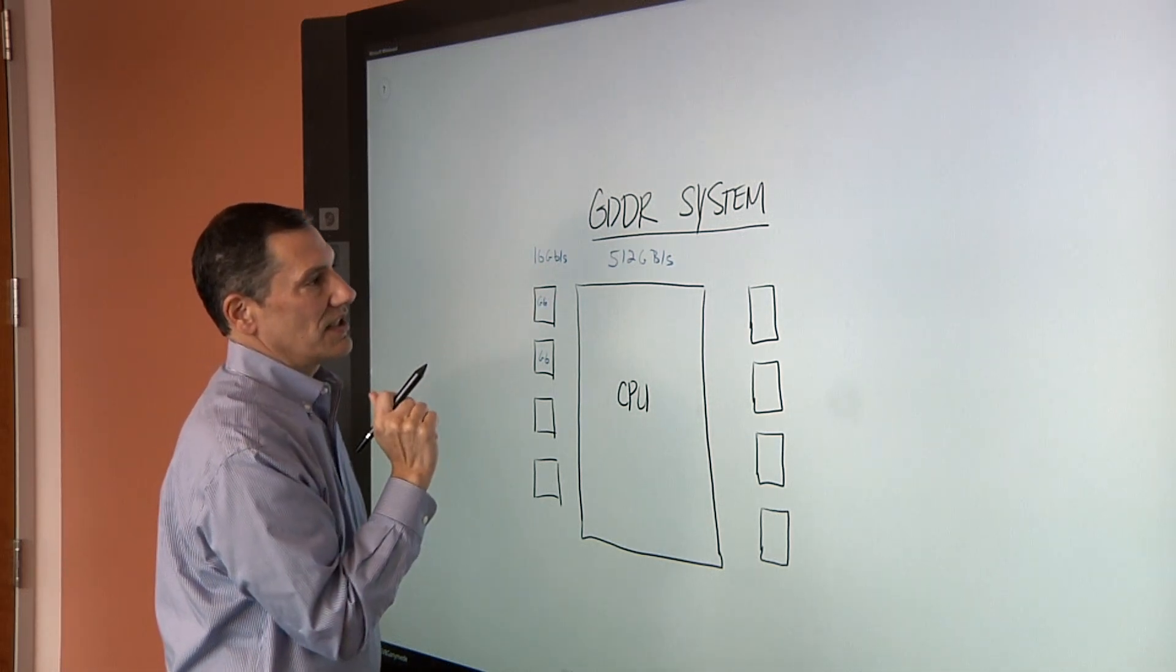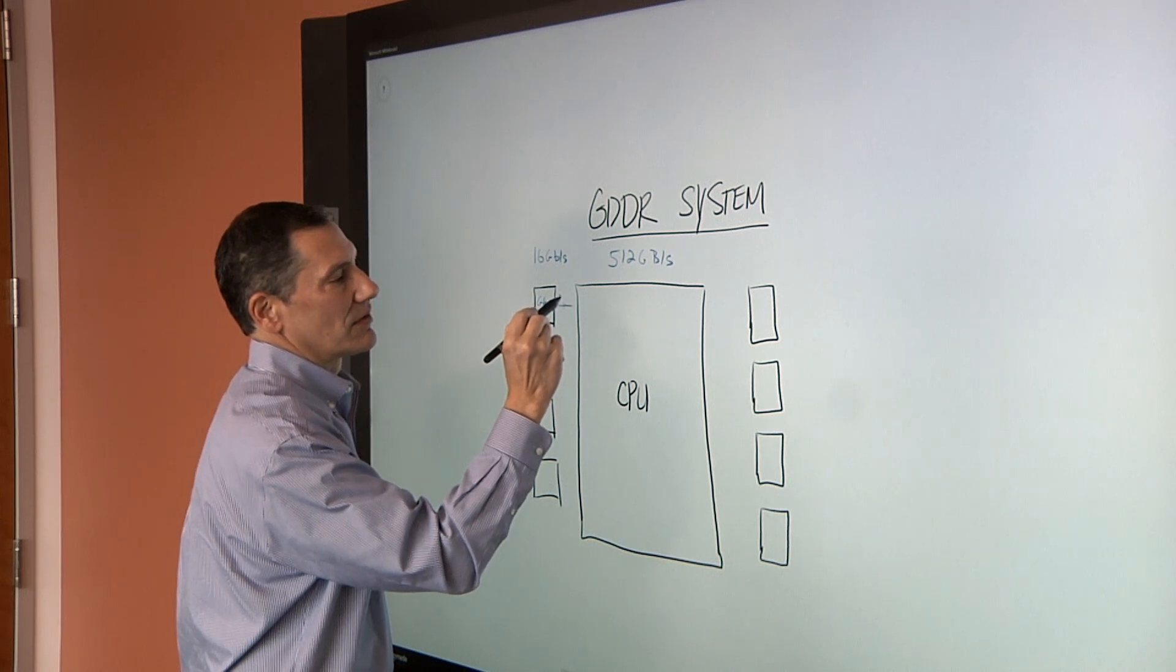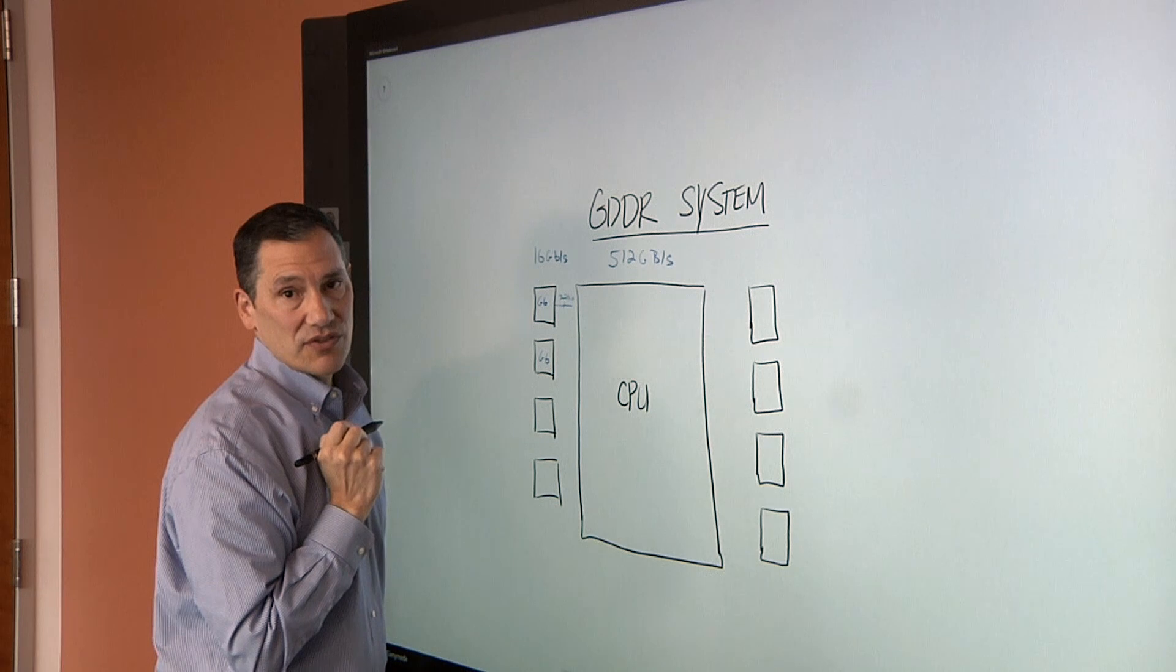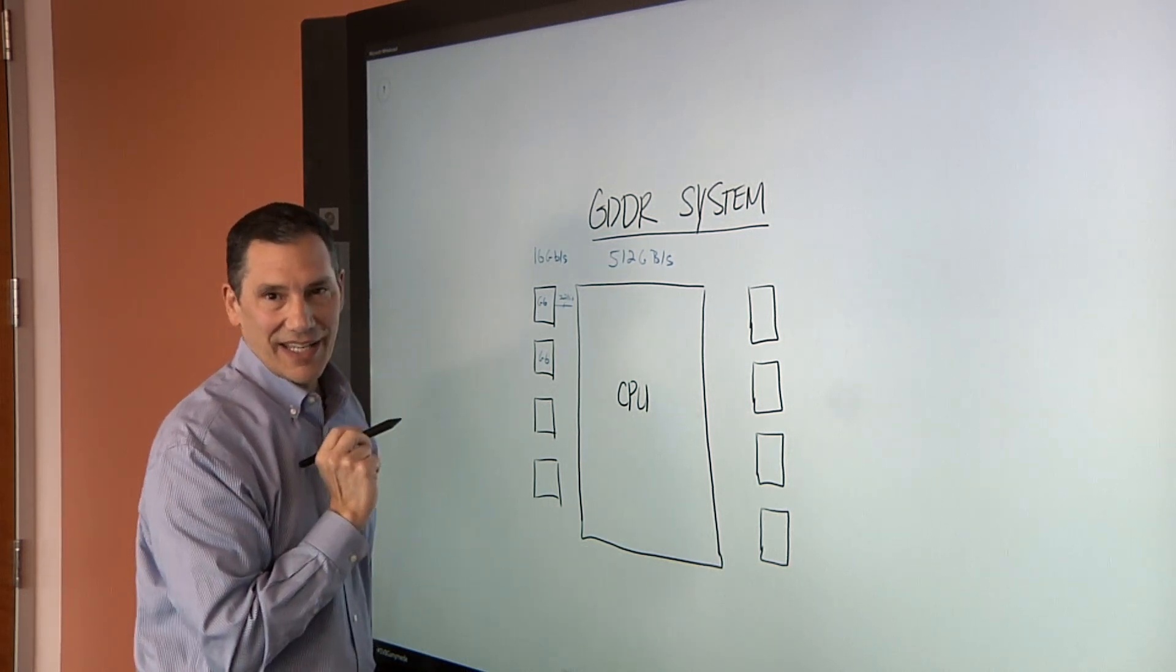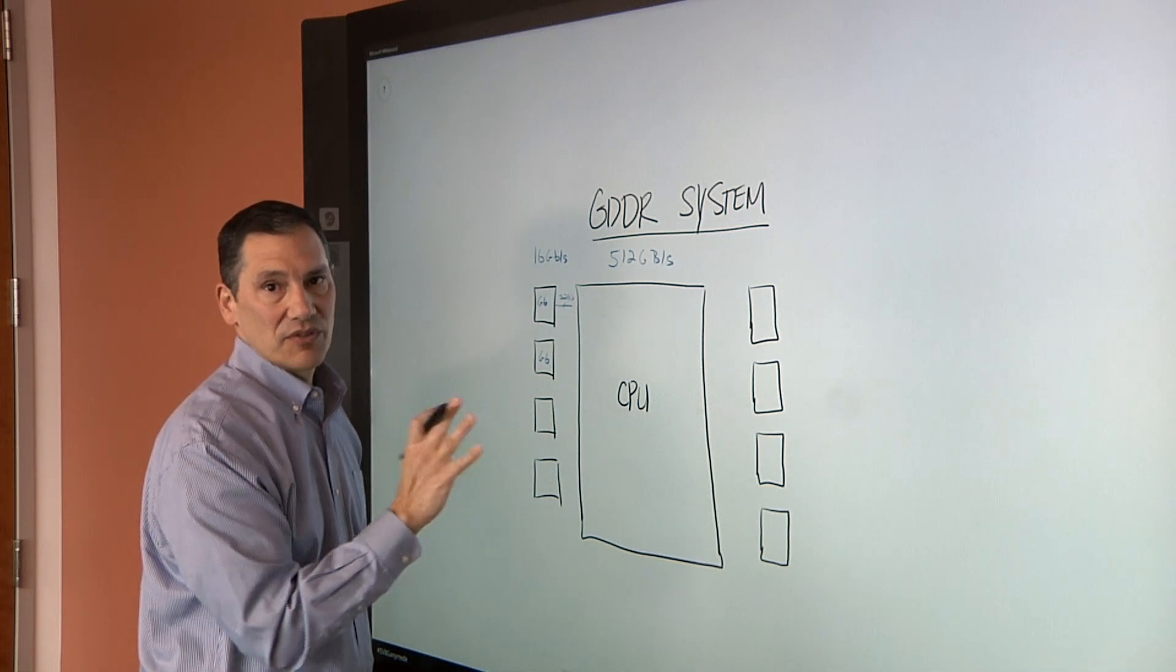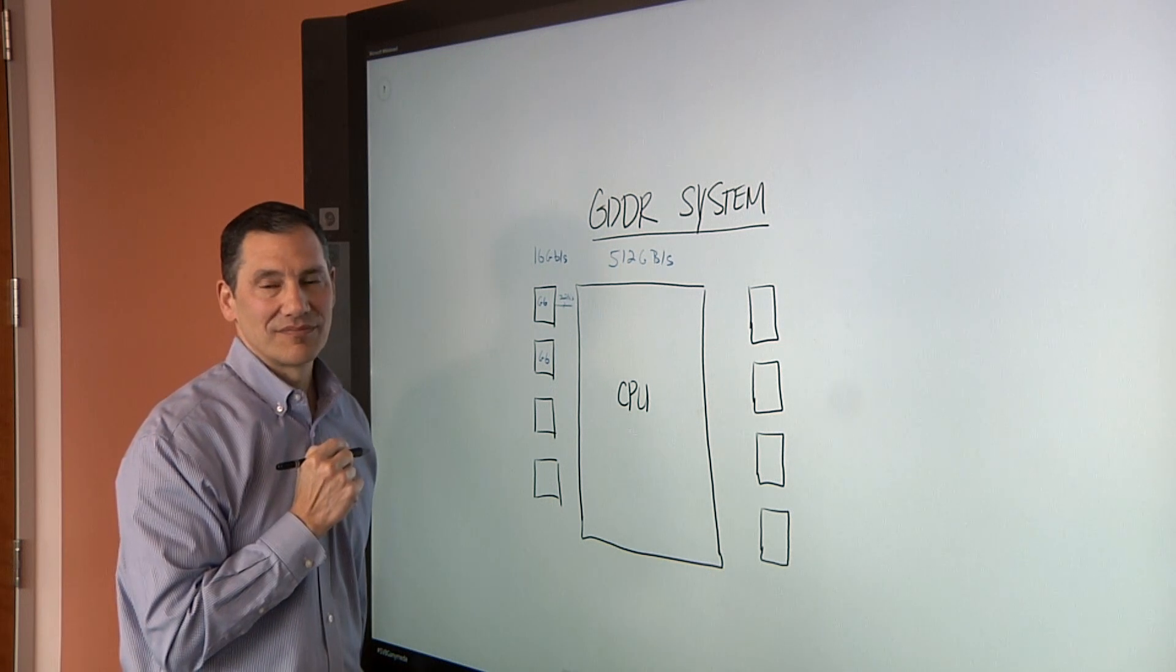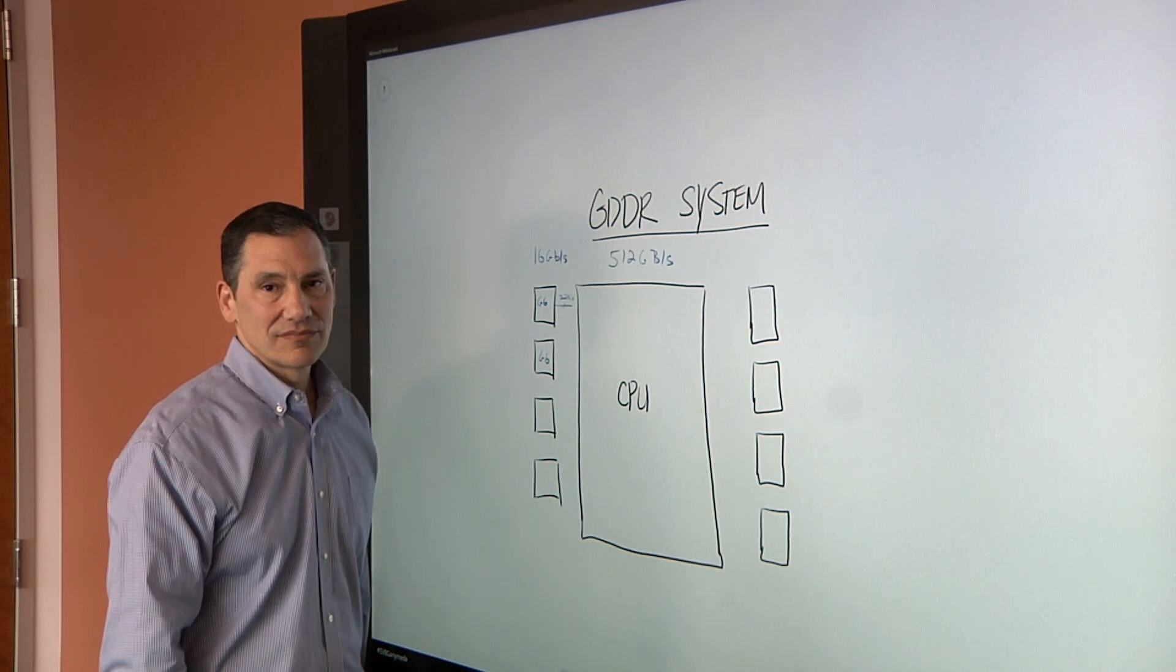Now we have a fairly high-performance system. If you do the math on this, right now we're running at 512 gigabytes per second with this particular configuration of GDDR. You've got 16 gigabits per second, each of these are 32 bits, 32-bit channels. Multiply by 16 and then multiply by 8, and that gives you the performance. Very high-performance system with these 8 GDDRs.